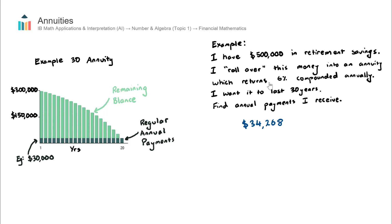Annuity questions can be asked in different ways — sometimes you need to find the interest rate, or maybe the initial value required for fixed repayments. This was just one example of how an annuities question can be asked. I recommend practicing some of these questions over in the question bank section. That concludes our video on annuities.